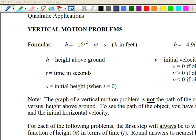In both formulas, h will be the height above the ground at any given time, t will be the time in seconds, and s will be the initial height when time is zero. For v, the initial velocity, we have three options. If the object is dropped, the initial velocity is zero so the middle term goes away. If v is positive, the object was projected upward. If v is negative, the object was projected downward. The problem will tell you specifically which one.